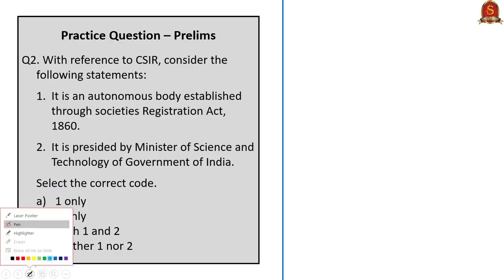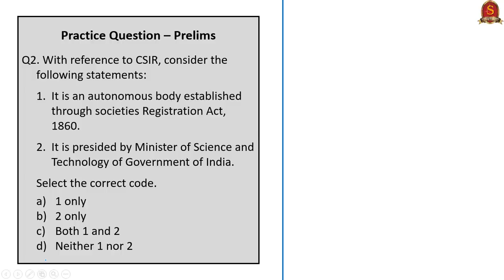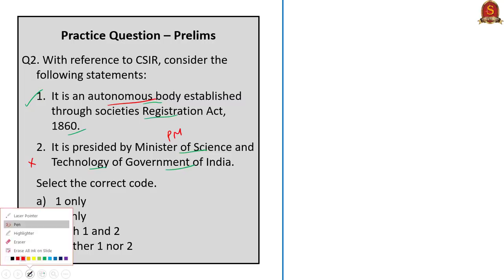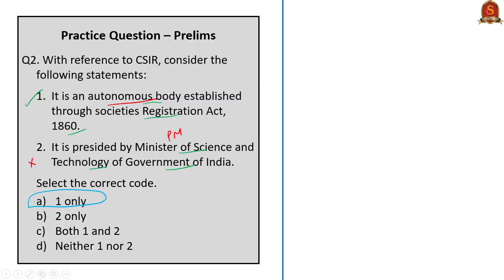The second practice question is on CSIR. Statement 1 — CSIR is an autonomous body established through the Societies Registration Act of 1860 — is correct. Statement 2 — that it is presided by the Minister of Science and Technology — is incorrect. Despite receiving funding from the Ministry of Science and Technology, CSIR is presided by the Prime Minister of India. The correct answer is option A, one only.